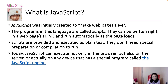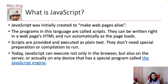What is JavaScript? Originally, JavaScript was created to make web pages alive. When we click a button, mouse hover, or mouse out, it does something on the page — like animation. The programs in this language are called scripts. They can be written right in a web page's HTML and run automatically as a page loads.